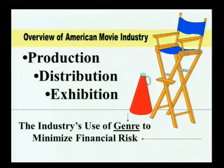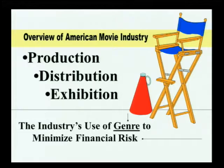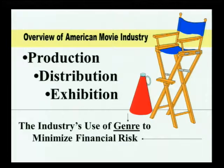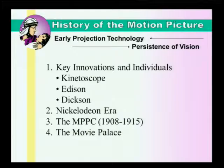Also significant to understanding the American movie industry is the use of genre to minimize financial risk. We make one film that people like — it has all the trappings that appeal to audiences, as in the Western — and if they like that, we make a whole bunch of them. Those popular kinds of movies minimize financial risk, make money, and in the old days could subsidize more experimental or unique films that don't fit into popular subject matter.